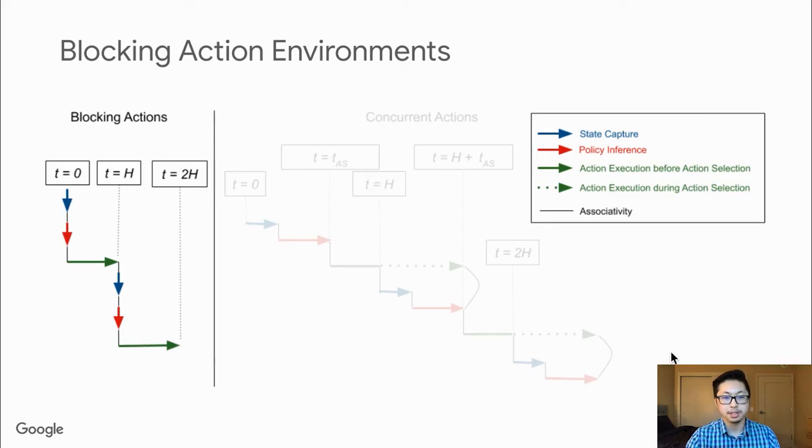In blocking environments, we assume that these two stages occur instantaneously. So we assume that the environment state that we observe and pass on to our policy is the exact same state in which we execute our policy-selected action. Essentially, we freeze the world while observing and thinking, and then unfreeze the world only when executing actions.